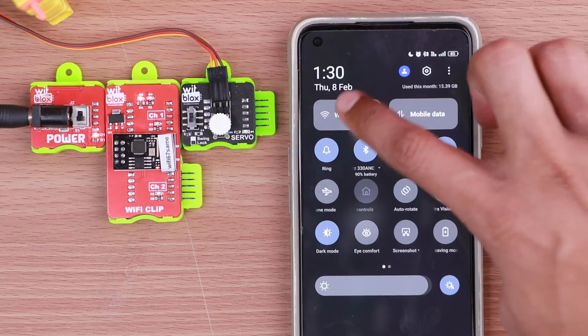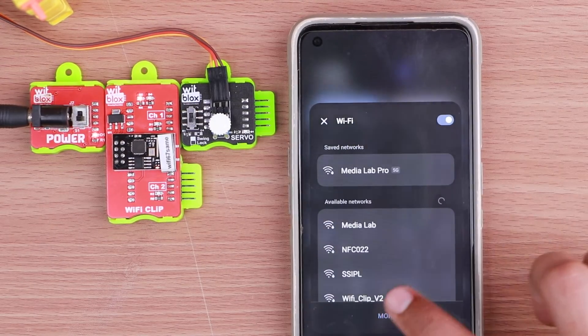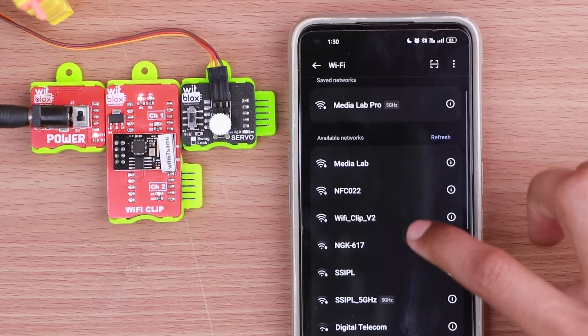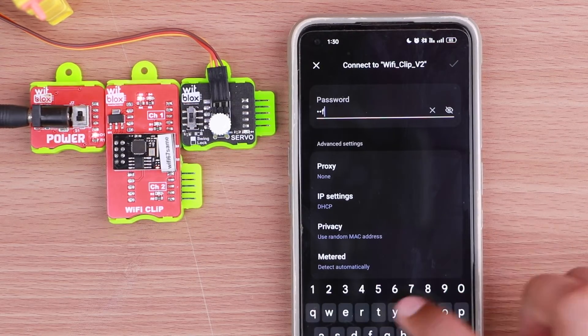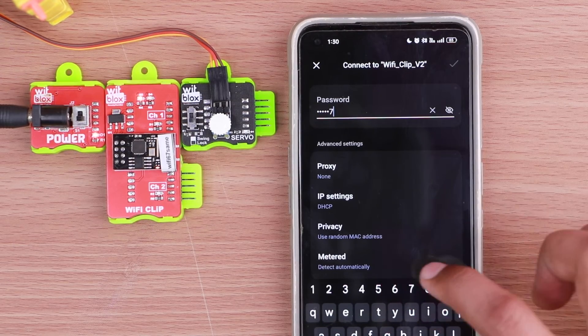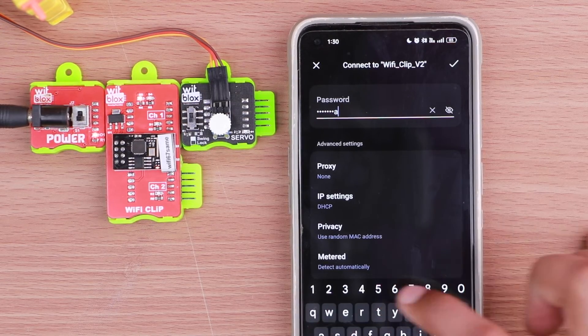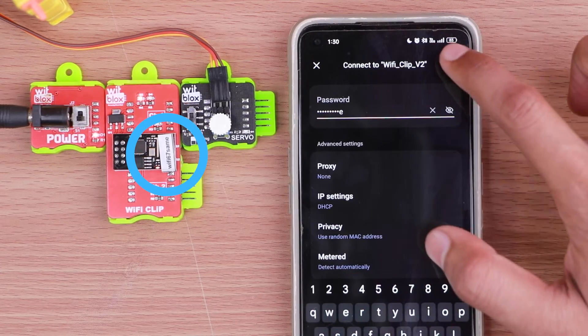Now take your smartphone and turn on your phone's Wi-Fi then go to the Wi-Fi settings. Here search for the Wi-Fi network named Wi-Fi Clip V2. Now connect to the Wi-Fi Clip V2 network by entering the password of the Wi-Fi blocks. The password is mentioned on the Wi-Fi blocks.